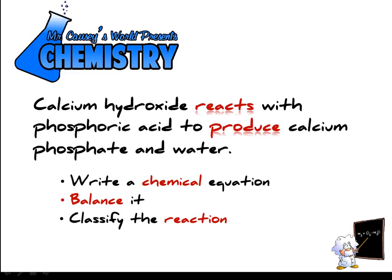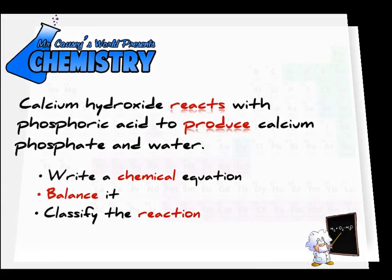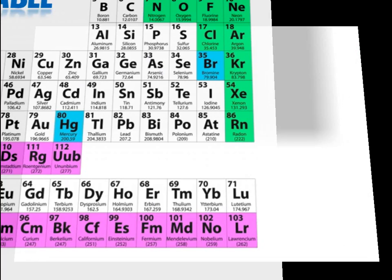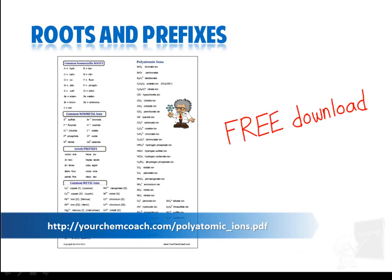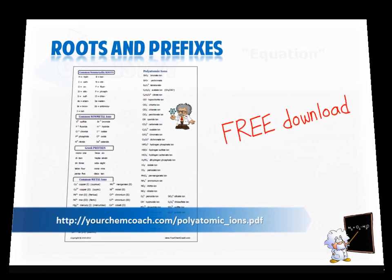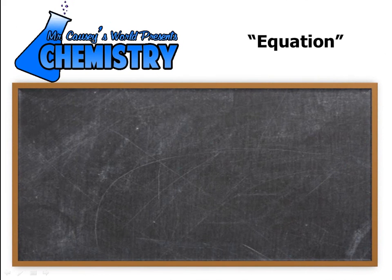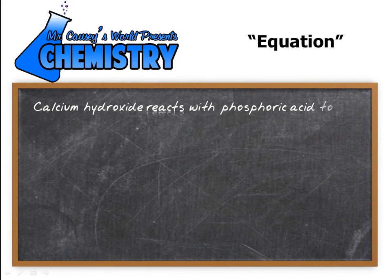Alright, get out your periodic tables, get out your polyatomic ion handouts. If you need a copy of that, you can go get it for free at the URL at the bottom of this page. Let's go to the magic blackboard. First thing we want to do is write an equation.